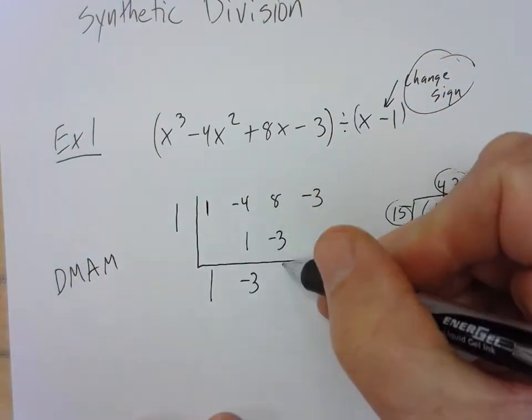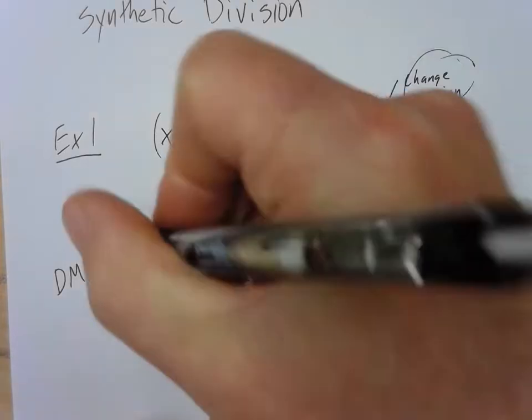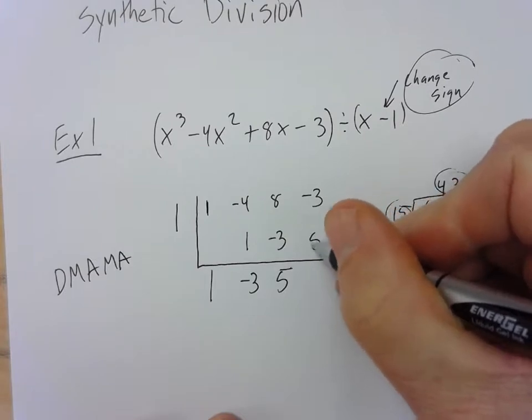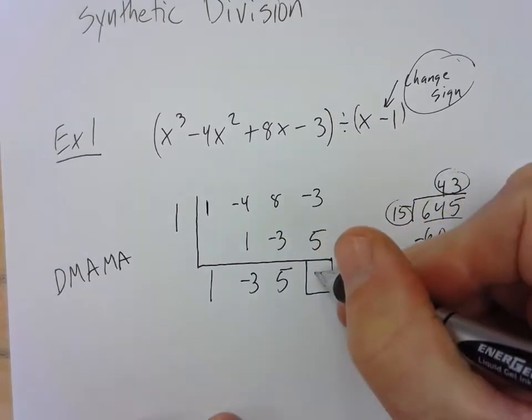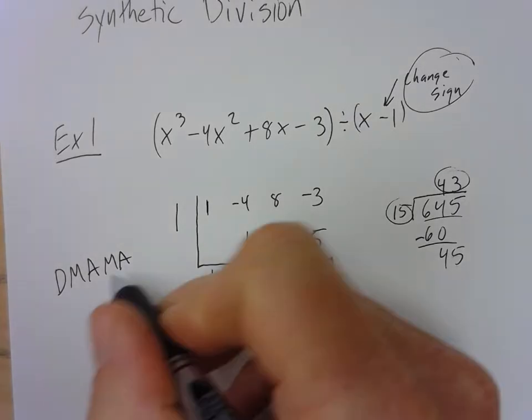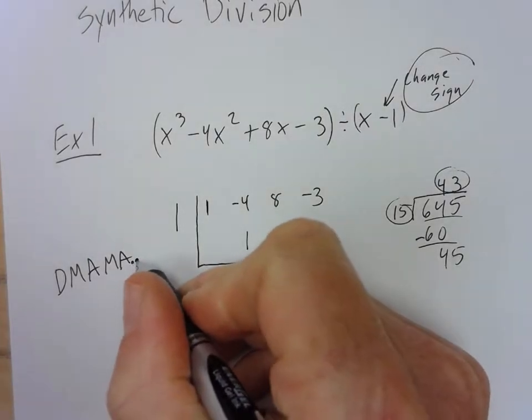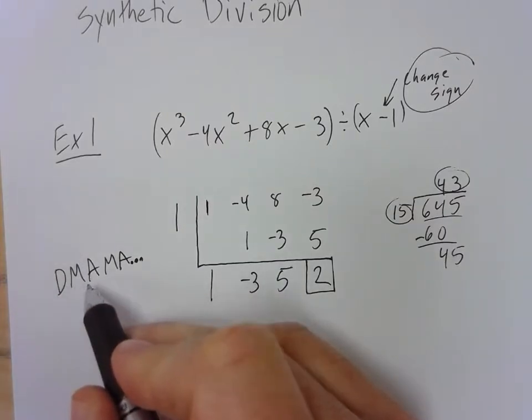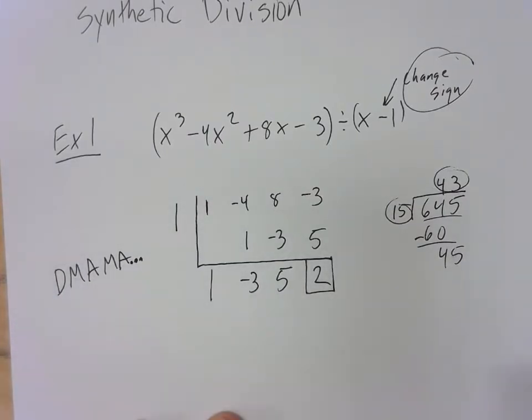1 times negative 3 is negative 3. So I put the answer right there. So there's multiply. And then I add. And then I multiply. And I box in the last number. And I add those two together. So the process for synthetic division is just remembering DMAMA. So we drop, we multiply, we add, we multiply, we add, we multiply, we add, until we're done.